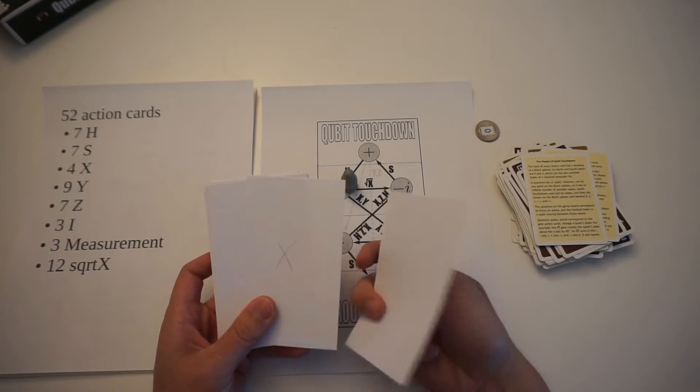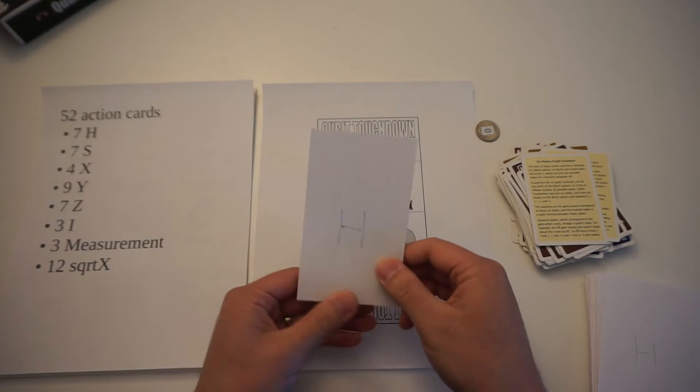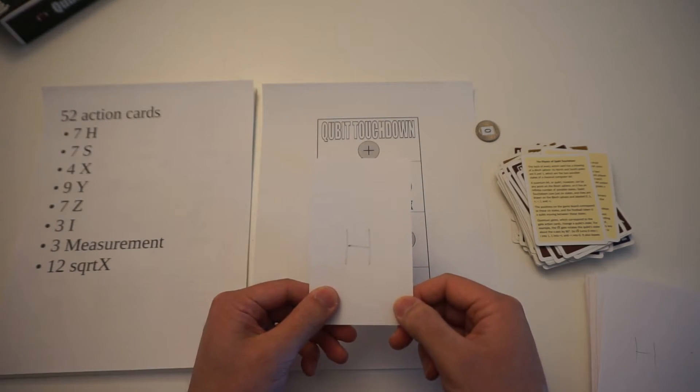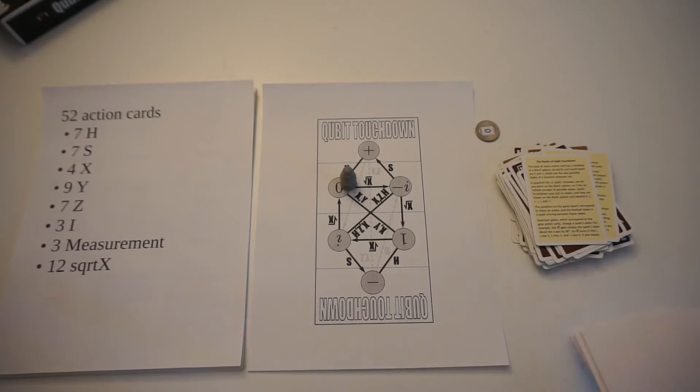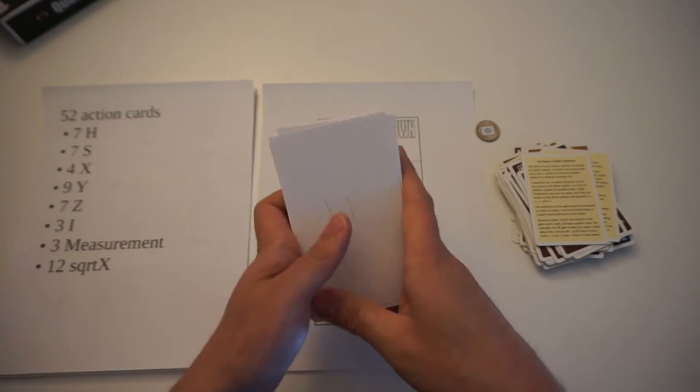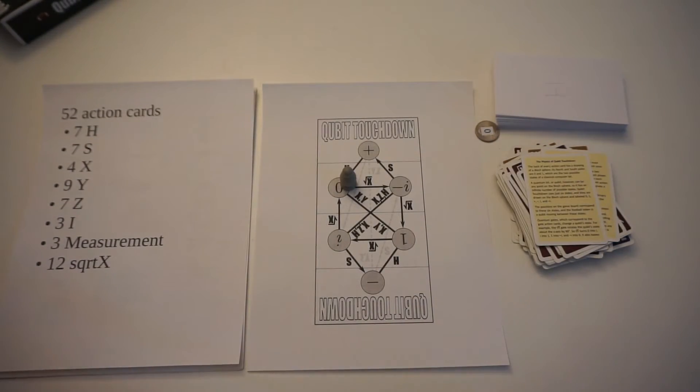That way you can't see through it too easily. If you use something like a marker, what happens is that your opponent can see through the card and see what you're holding. So you don't want to use something like that. You want to write lightly or use thicker cards. So you can make your own cards using something like index cards.